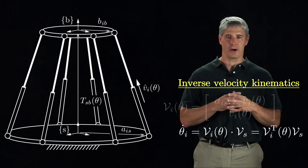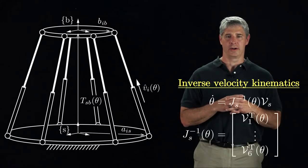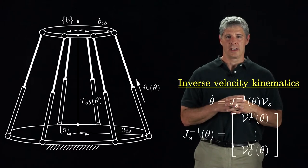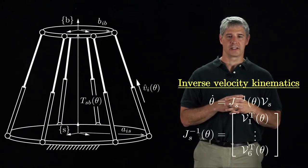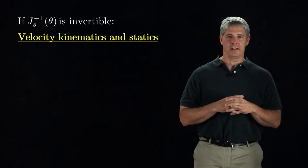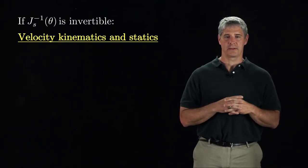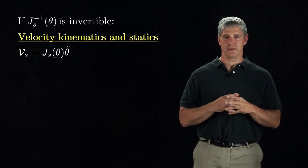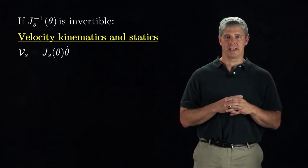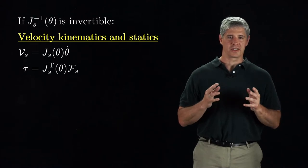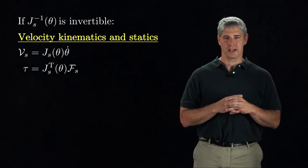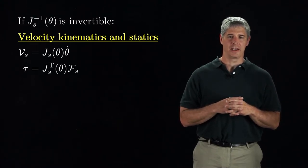This calculates the component of V s along the joint axis. Repeating this analysis for all the legs, we can write the i-th row of the inverse of the space Jacobian, or J s inverse, as the screw axis V i transpose. Now if the Jacobian inverse is invertible, we have the velocity kinematics and statics in the S frame. The spatial twist V s equals J s times theta dot. And the joint forces tau equals J s transpose times F s, the wrench applied by the end effector.